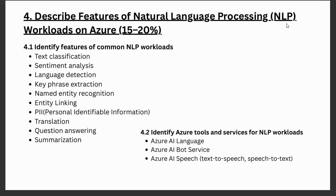The fourth module is Describe Features of the Natural Language Processing (NLP) Workload on Azure. We will first explore what NLP is, then look at its features: text classification, sentiment analysis, language detection, key phrase extraction, named entity recognition, entity linking, PII detection, translation, question answering, and text summarization. After covering these common NLP workloads, we will explore Azure tools like Azure AI Language, Azure AI Translator, and Azure AI Speech.